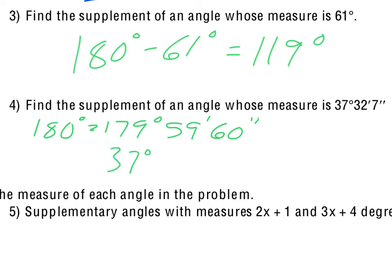But now I have degrees, minutes, and seconds that I can subtract my degrees, minutes, and seconds from. And so we end up with a total of 53 seconds. The 59 minus the 32 gives me 27 minutes. And then 179 minus the 37 gives me 142 degrees.